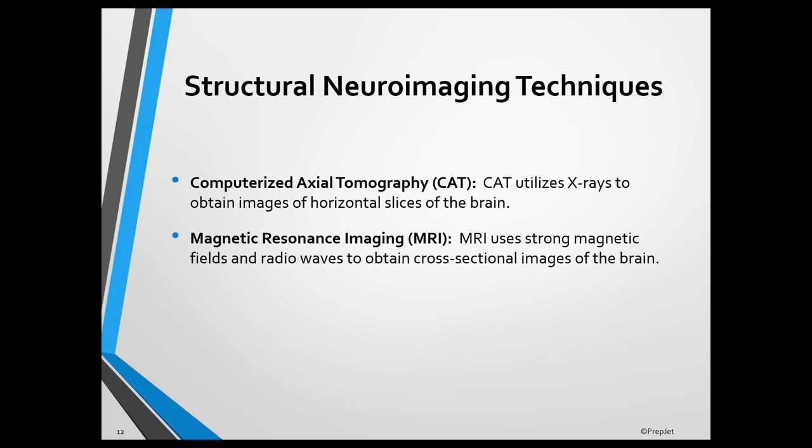Advantages of CAT are that it costs less than an MRI, provides images more rapidly, and unlike MRI, doesn't require the patient to be motionless for a long period of time. Also, unlike MRI, computerized axial tomography can be used with patients who have pacemakers, metal plates, or other metal in their bodies.